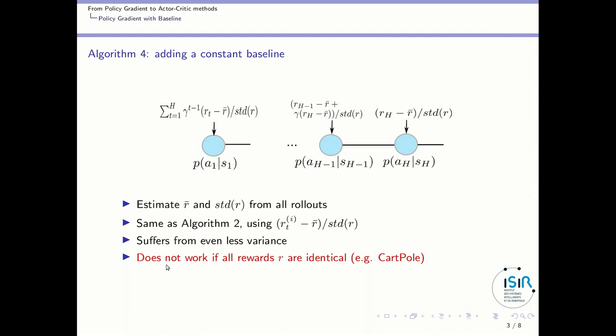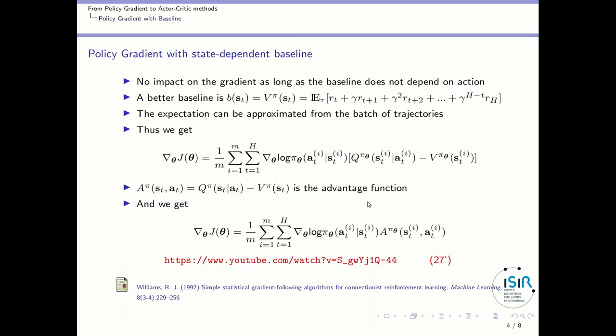The point is that if all rewards are identical, which is the case, for instance, in the cart-pole benchmark, then you cannot divide by the standard deviation, which is null. So this does not work in all cases. In fact, we can do better than subtracting from a constant baseline.